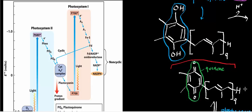What we just looked at were all the events in photosystem 2 that led up to the production of totally reduced plastocyanin. Plastocyanin has a copper ion that accepted electrons ultimately from cytochrome F of the cytochrome B6F complex. Now we're going to find out what happens to the electrons that are in plastocyanin.